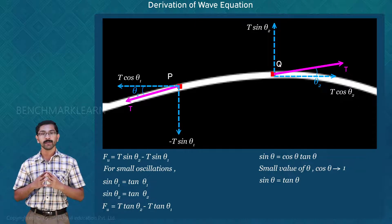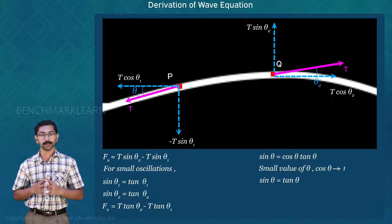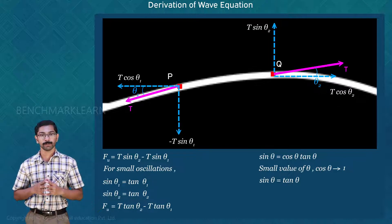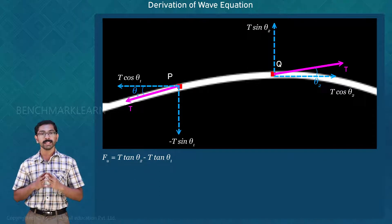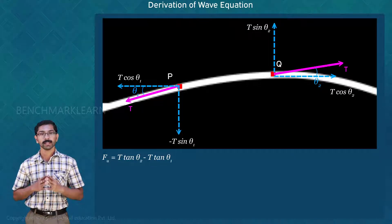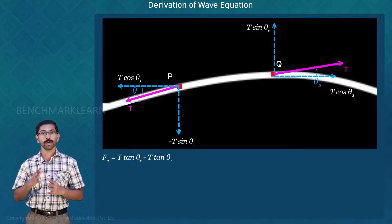We know that if a curve makes an angle θ with the positive x-axis, then tan θ is the slope of the tangent. The slope of the tangent can be defined using the derivative — that is, tan θ equals the derivative of the function. Here our function is the displacement function u(x, t), so the slope of the tangent is the partial derivative of u with respect to x. Thus, tan θ1 = ∂u(x, t)/∂x evaluated at x.